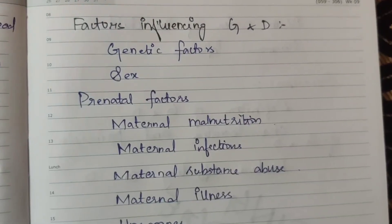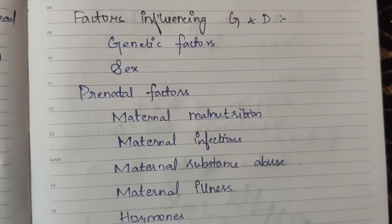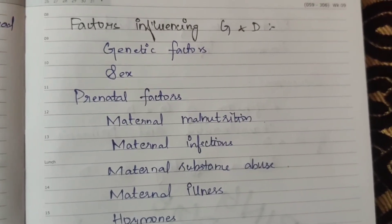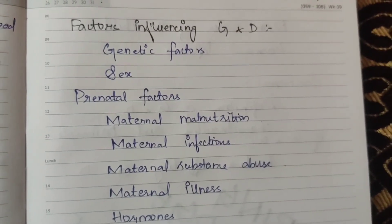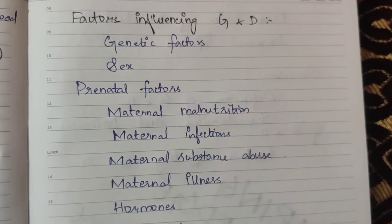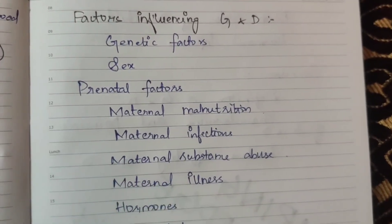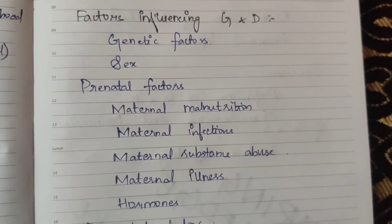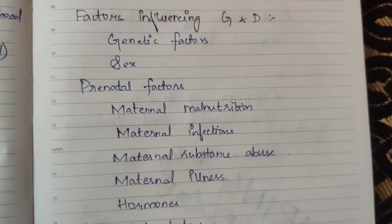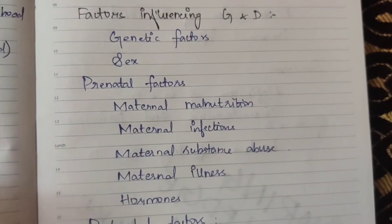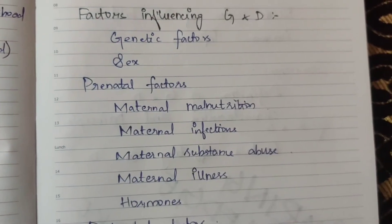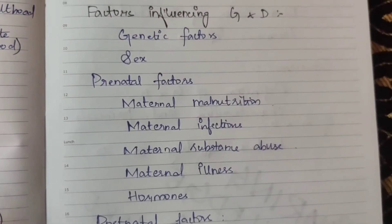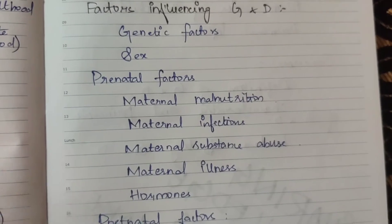Factors influencing growth and development — this is important, worth 5 to 15 marks. Genetic factors involve your own inherited characteristics and skills. Next is sex: girl children develop speed earlier, boys are slower, but both show significant changes. Girls are more prominent in early development changes.